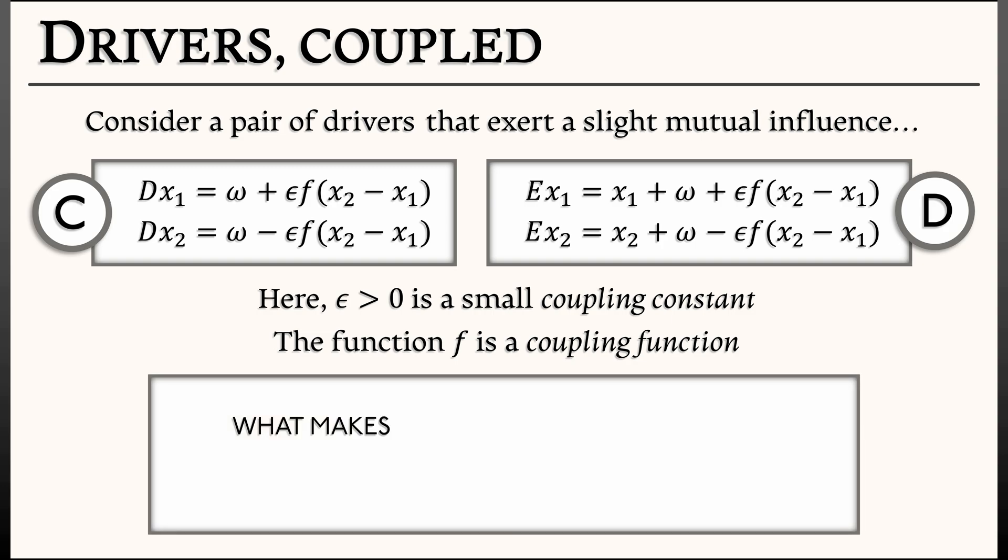Now, what is this f? What makes for a good coupling function f? What we want is for f of 0 to be 0. That means when the two drivers are at the same state, there's no influence. On the other hand, if phi is negative, so if x1 is ahead of x2, then we want f of phi to also be negative, so that it slows down x1 and speeds up x2.